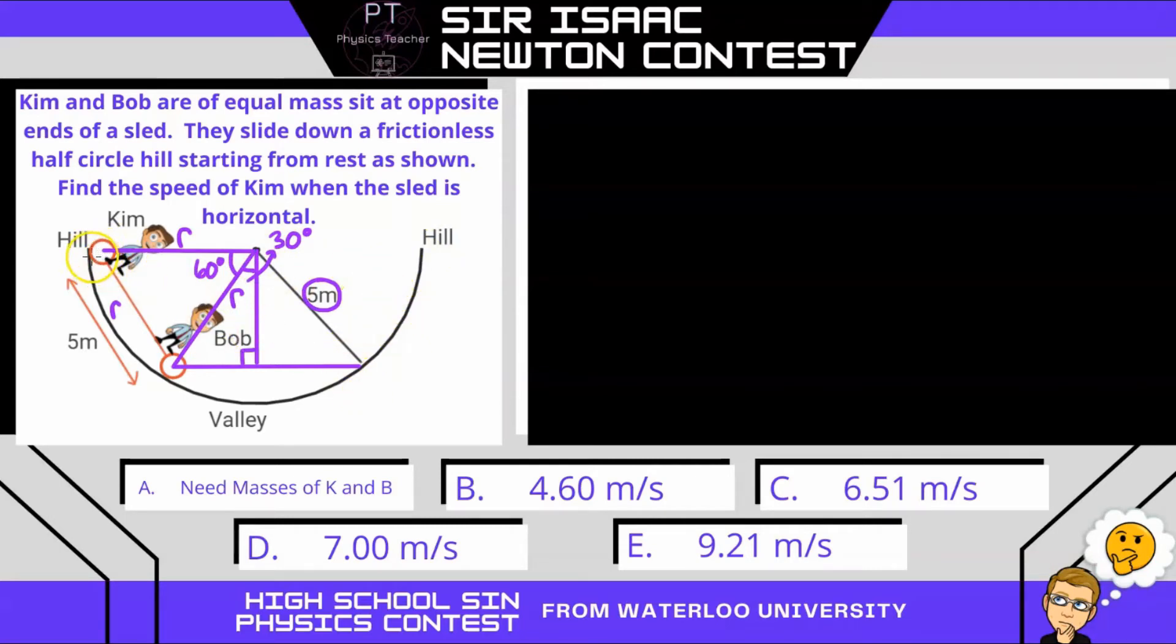Alright, so what happens is Kim is going to fall from this top of the hill, this position, all the way down to this position. So Kim has a certain change in height. She loses gravitational potential energy. Bob, however, moves from this position to this position. That's the exact same height. So Bob doesn't lose nor gain any potential energy. So if we were to look at this as a conservation of energy problem, let's have the total energy at this initial point equal the total energy when they're horizontal. Let's call that Et prime.